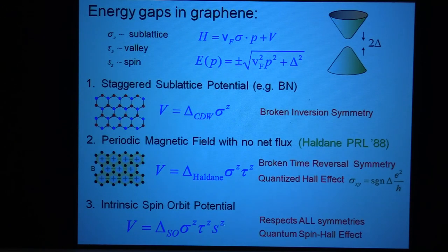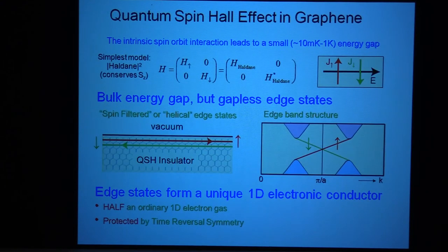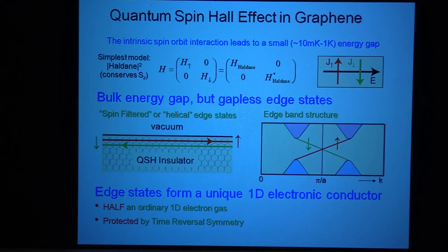This mass term is just Sz — the up spins have this with a plus sign and the down spins have this with a minus sign. That means the up and down spins independently are in integer quantum Hall states. So we have an energy gap, but we have to have chiral edge states. These chiral edge states are interesting because the up spins are going one direction and the down spins are going the other direction. We now call these edge states where the direction of motion is correlated with the spin — we call them helical edge states.